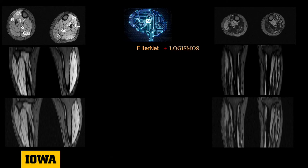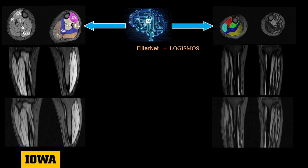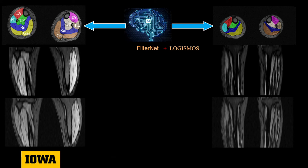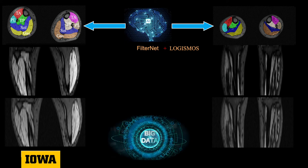By using the graph search framework LOGISMOS for post-processing, the combination of deep learning and LOGISMOS outperforms all other state-of-the-art deep learning approaches. But here comes another problem.